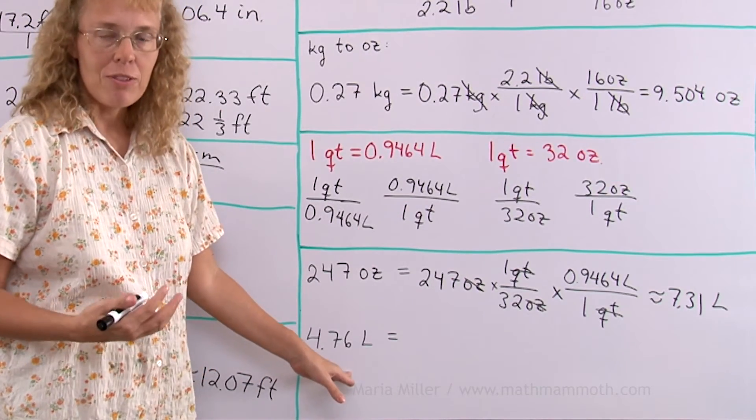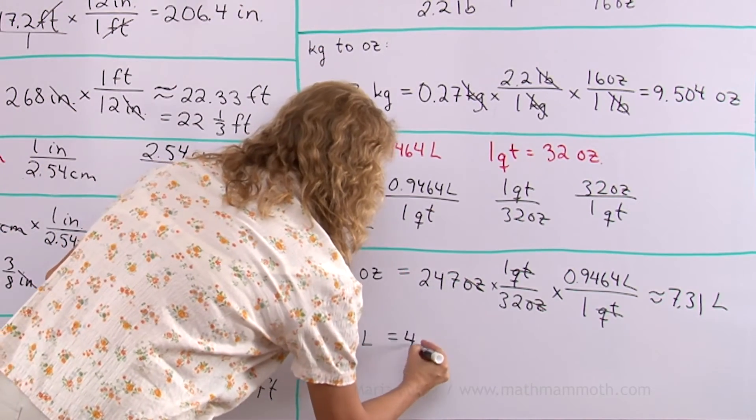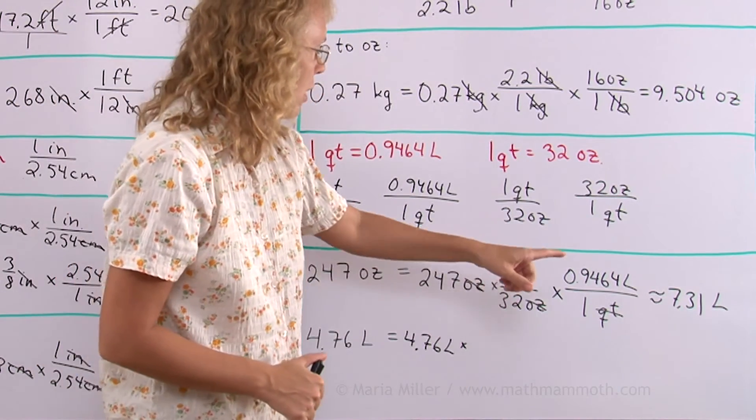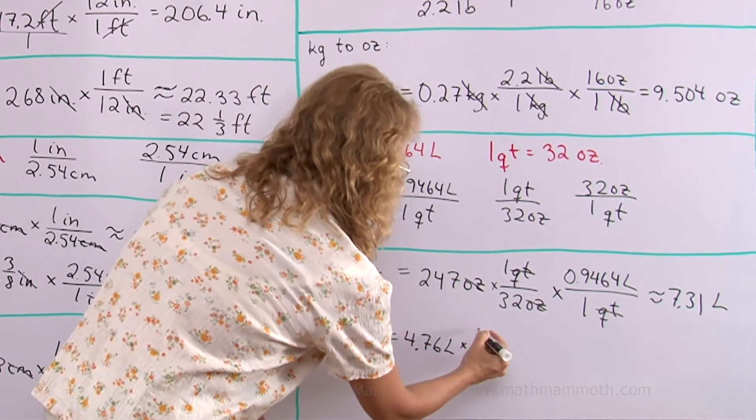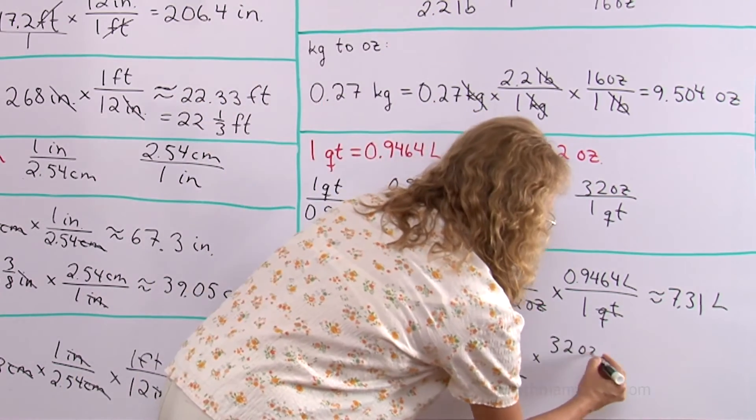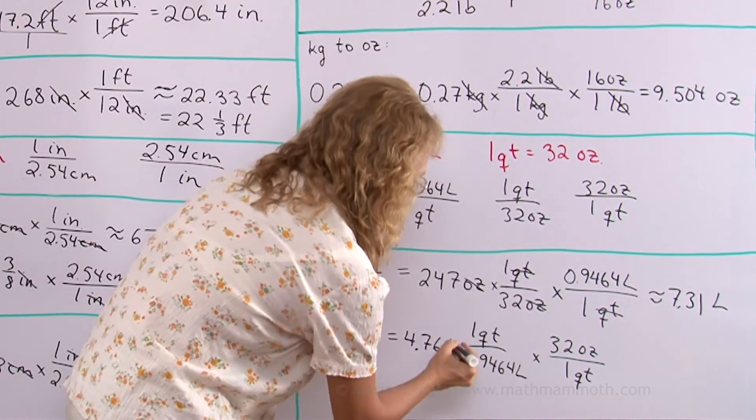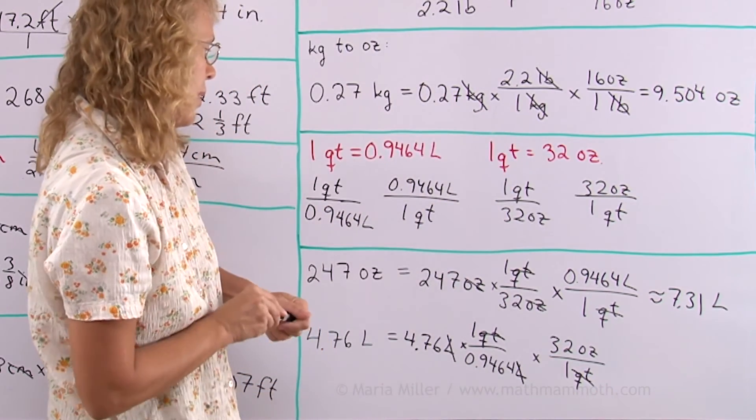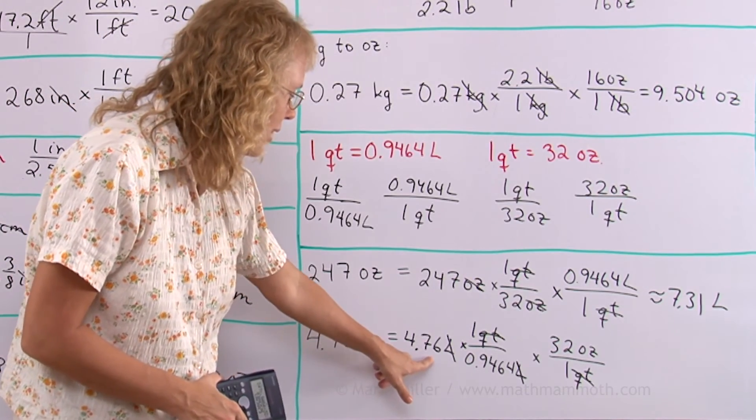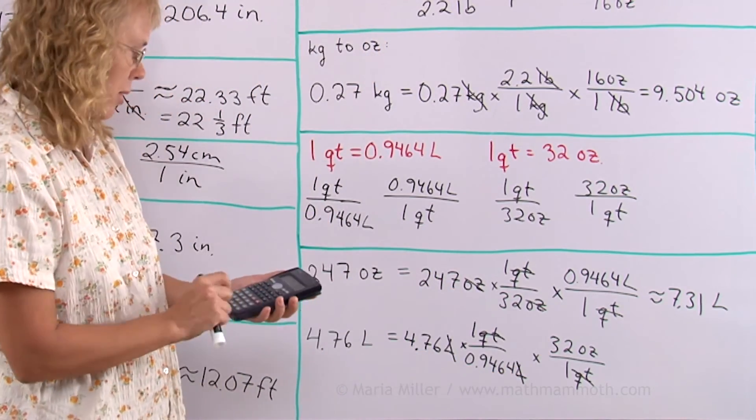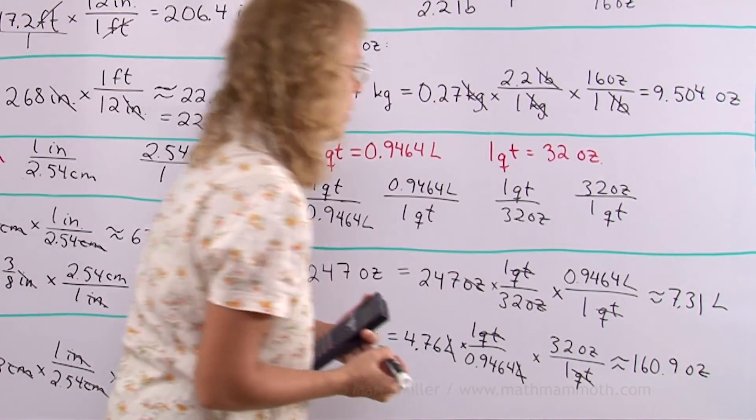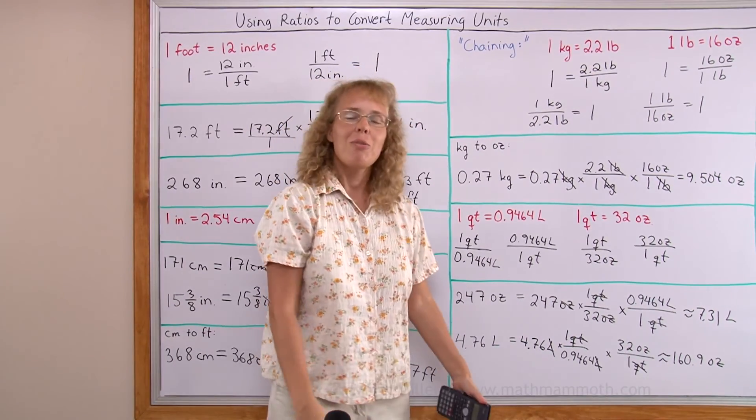Lastly we will do just the opposite way around from liters to liquid ounces. So it ends up being just the opposite way around. I have to use instead of this I'll have to use this one where the liters are in the denominator. And then I want quarts in the denominator and ounces on top. Again cancel your units liters from here and quarts from there. Now we will have ounces as a unit and the calculator again. This time it is 4.76 times and then 32 and then divide it by that decimal number. 160.9 liquid ounces. We are all done and I hope this was helpful.